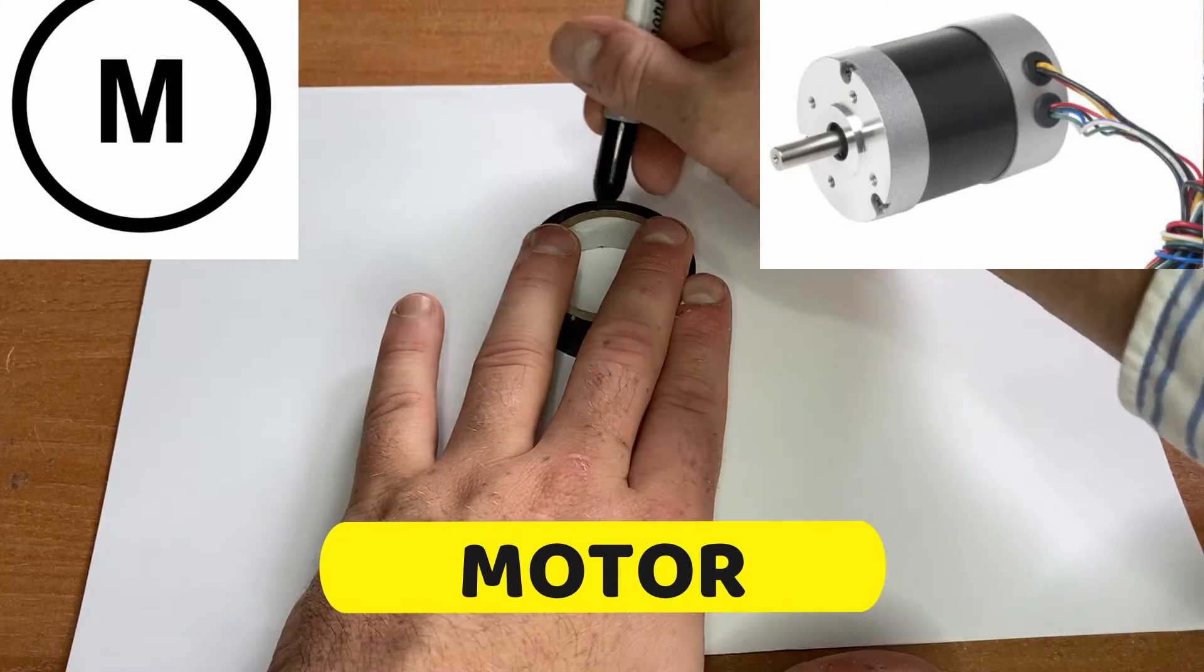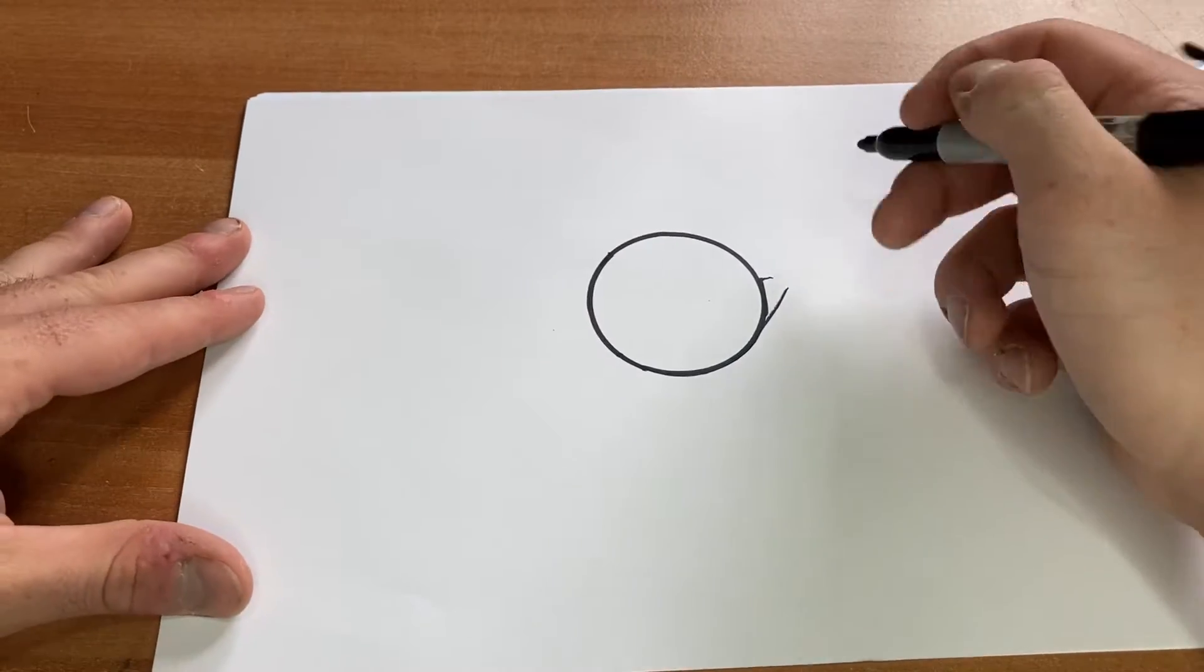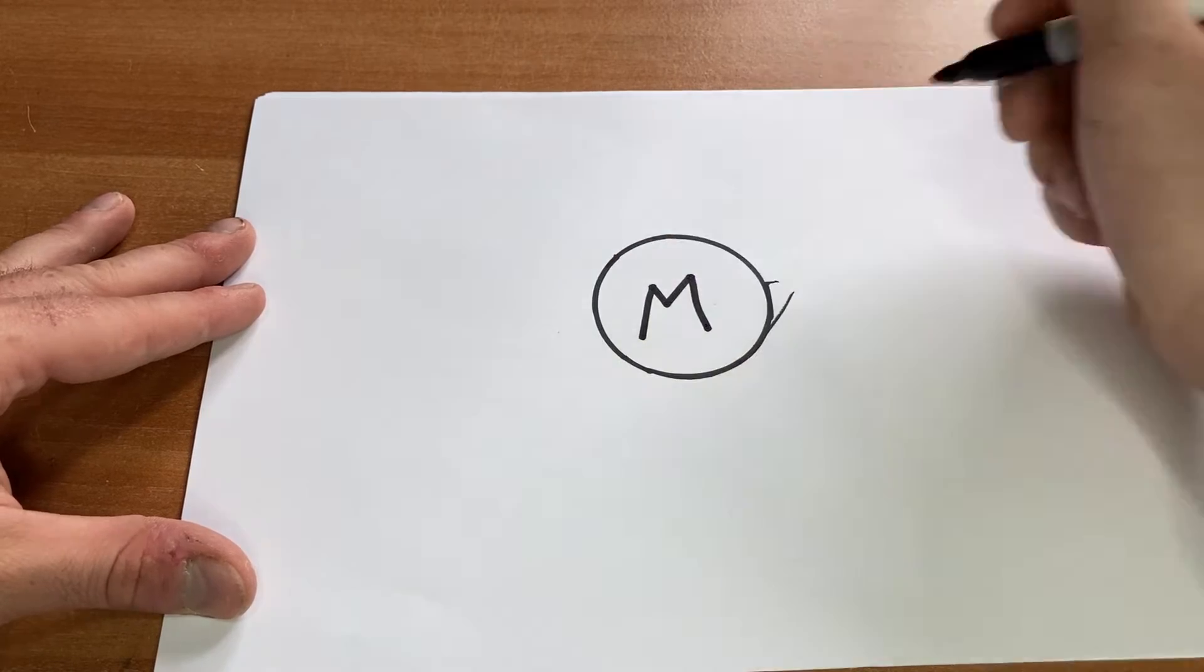Next I'm going to draw the motor. Just draw a circle. And all you're going to do is draw an M in the middle. M for motor.